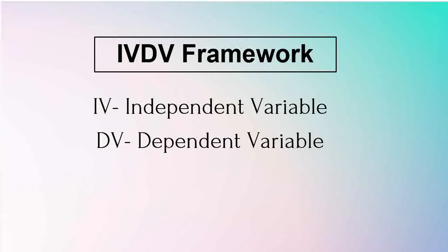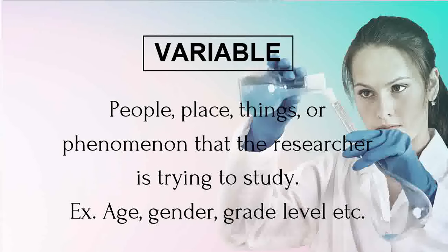Let's begin. When we say IVDV framework, it stands for independent variable and dependent variable. Maybe you are confused — are these concepts different, and what makes them the same? What makes them the same is the concept of the word 'variable.' What is a variable? I would like you to look at the definition in my slide. When we say variable, these are people, places, things, or phenomenon that you, the researcher, are trying to study.